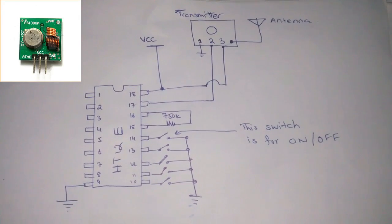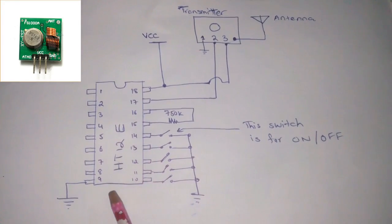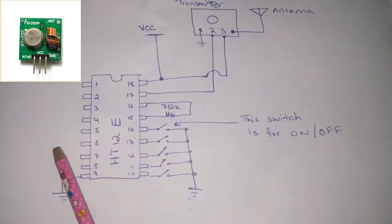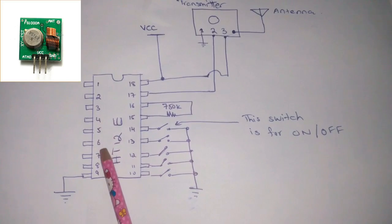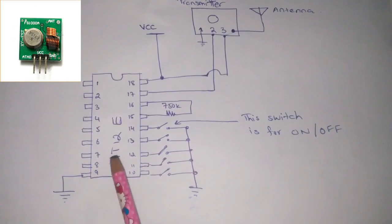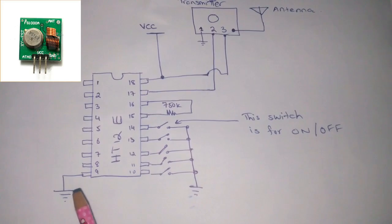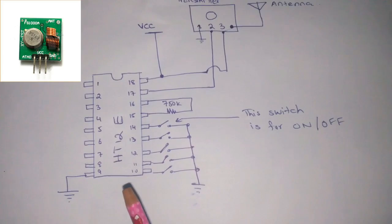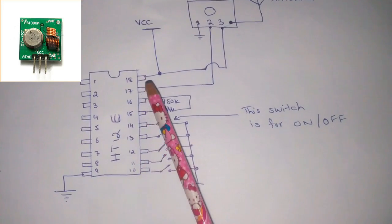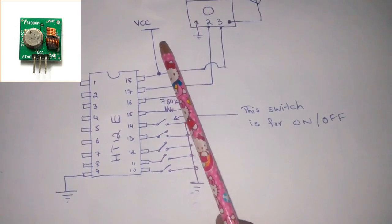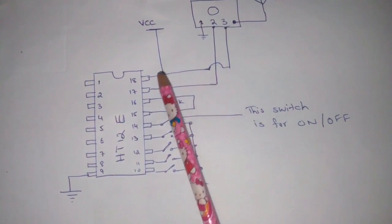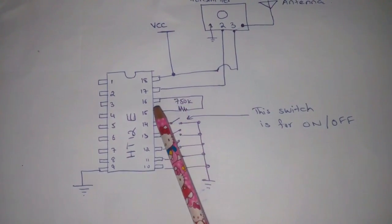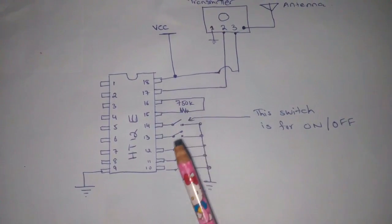In this circuit diagram, this is the HT12E encoder IC which has 18 pins. Pin number one starts from here. These are address pins from pin number one to pin number eight. Later I will explain what is the purpose of these address pins. Pin number nine is the ground pin that is connected to ground. Pin number 18 is the VCC pin of the encoder IC and is connected to the VCC pin of the transmitter module. Pin number 17 is the data pin — through this pin the data is sent to the transmitter, and the transmitter then sends data to the receiver circuit to perform an action.